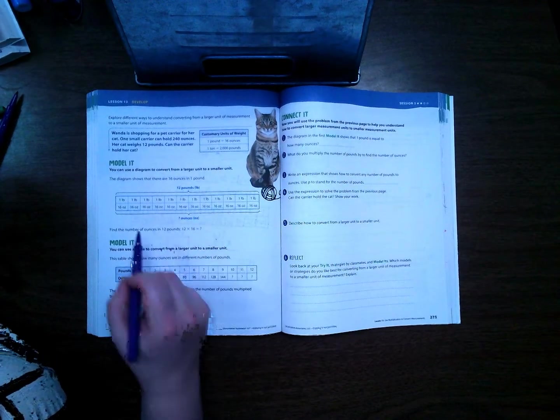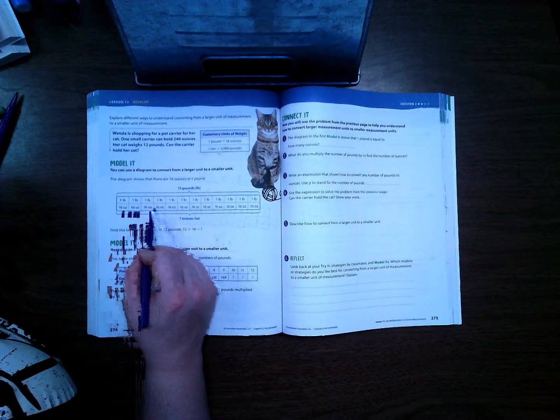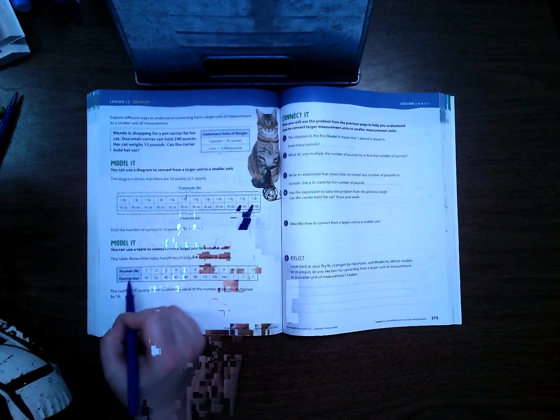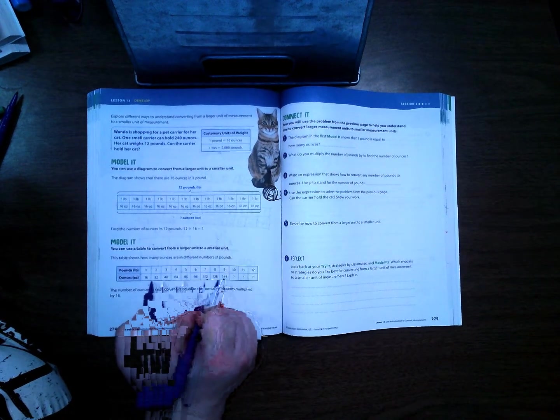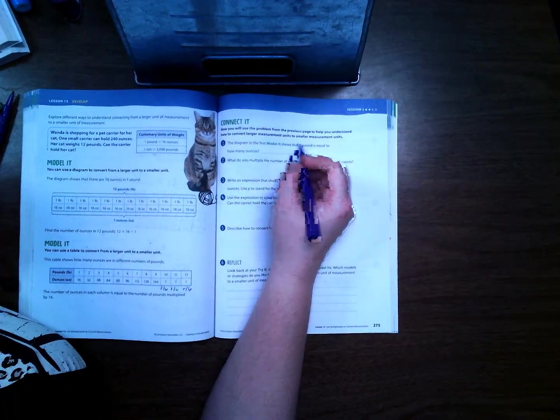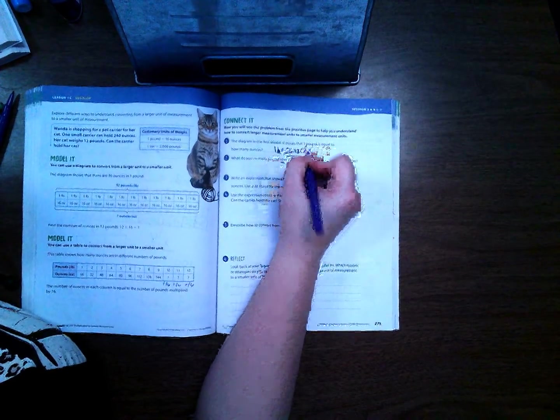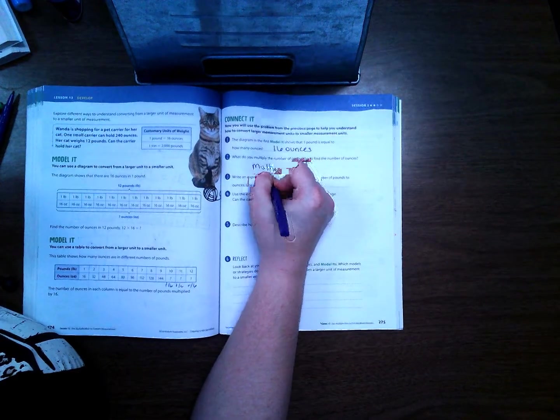On this page here we can see that you can do it this way where you're adding 16 ounces 12 times, or here's another way where it adds and you just keep adding 16, but again this way is really easy to make mistakes. The diagram in the first model shows that one pound is equal to how many ounces? 16 ounces. What do you multiply the number of pounds by to find the number of ounces? You multiply by 16 because there's 16 ounces.